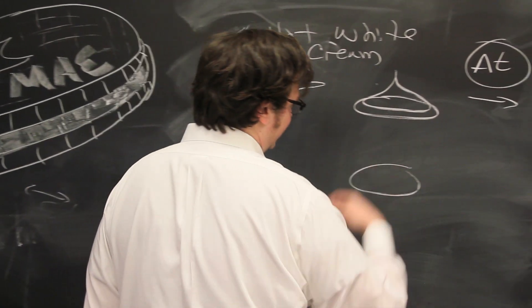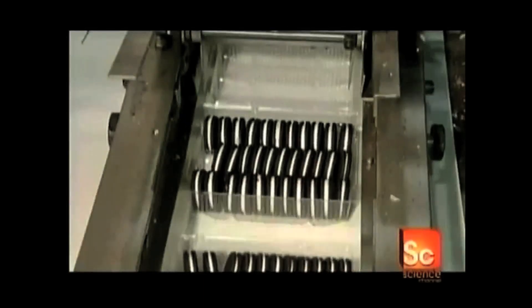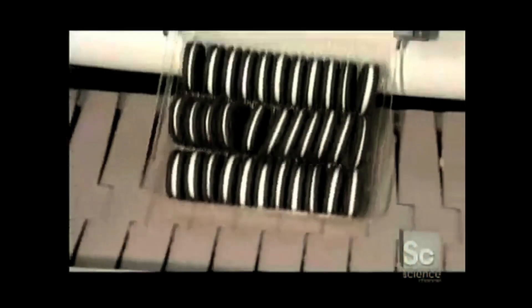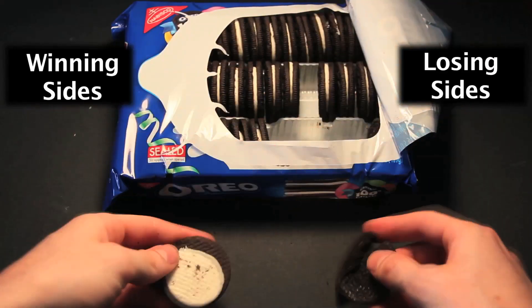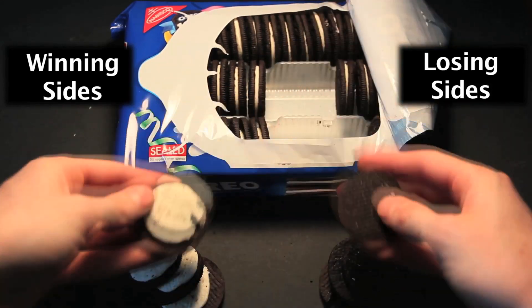So one side will have a stronger bond between wafer and cream. So there's your answer. It turns out that because of the way Oreos are made, the winning sides all face the same direction in the pack. Just figure out which direction it is for your pack, and you'll never lose.